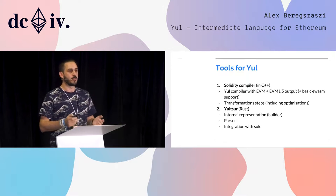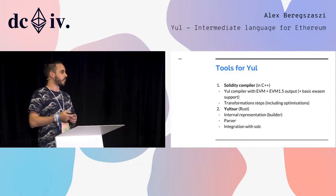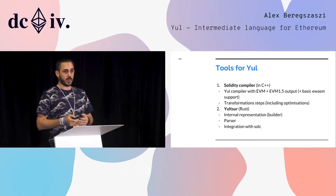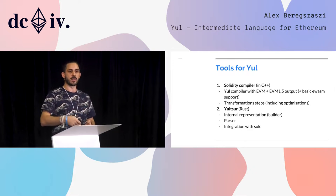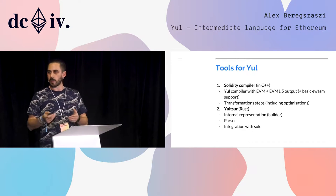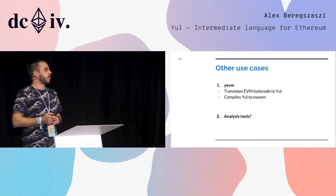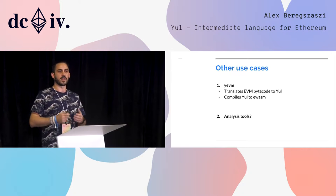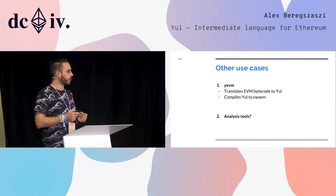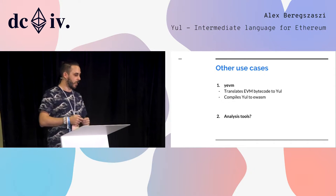The tools regarding Yul: pretty much everything is in the Solidity compiler, which is C++. But there's already a Rust implementation of Yul called Yul-sewer. In this Rust implementation, you can create Yul code programmatically, print it out, parse Yul code, do transformations, and print it out. This Rust library is also integrated with solc to tap into the optimization steps and the compiler. Another use case I really like is YEVM — it came from a need in eWASM. With eWASM, we want to replace the EVM entirely. YEVM translates EVM bytecode into Yul source code, which can be compiled back to EVM for validation, or compiled directly to eWASM. I think this is a really cool project.